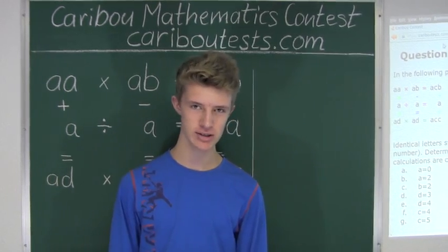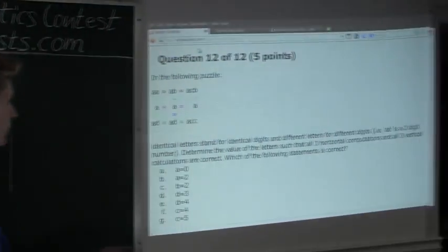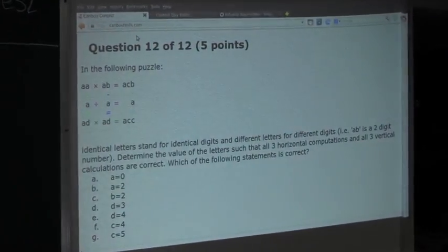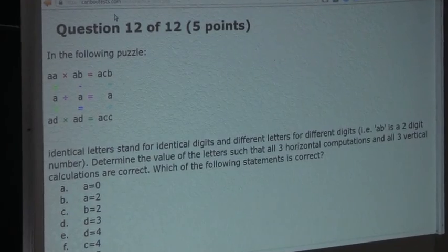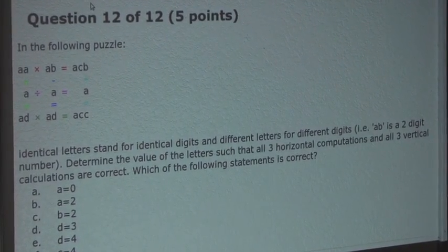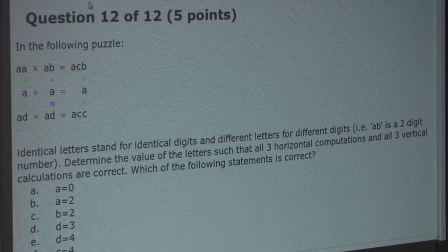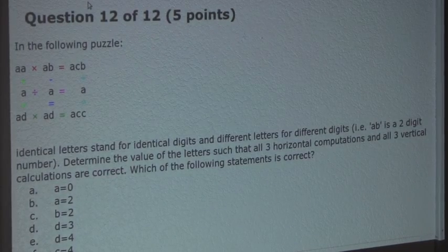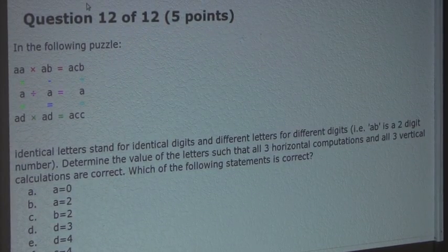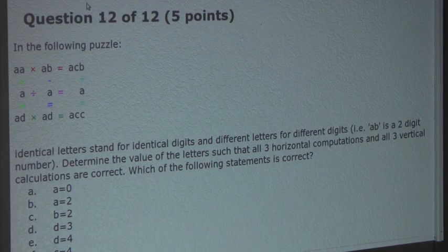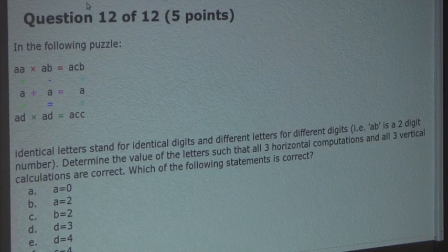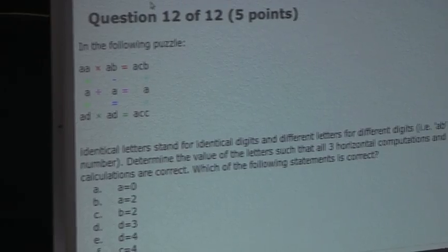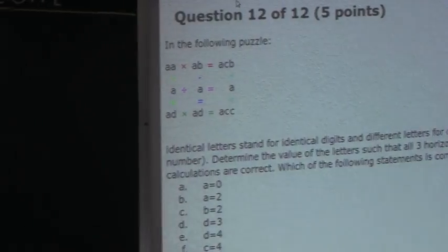So the question is, in the following puzzle, identical letters stand for identical digits, and different letters for different digits. For example, AB is a two-digit number. Determine the value of the letters such that all three horizontal computations and all three vertical calculations are correct. Which of the following statements is correct?